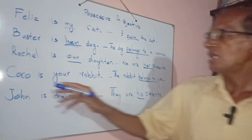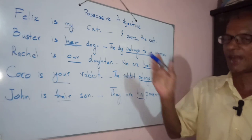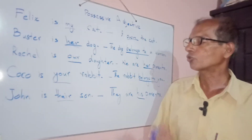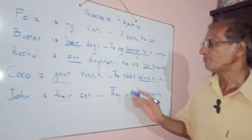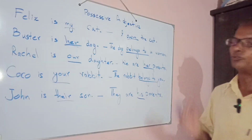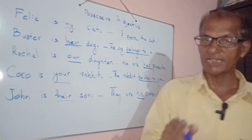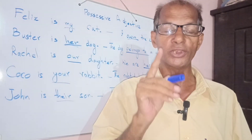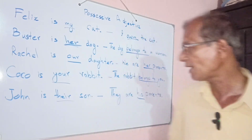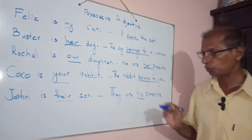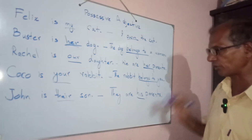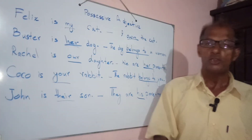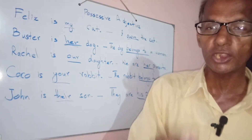Coco is your rabbit. Coco tumhara khargoosh hai. The rabbit belongs to you — you are the owner. You own the rabbit. So 'your' is the possessive adjective here.